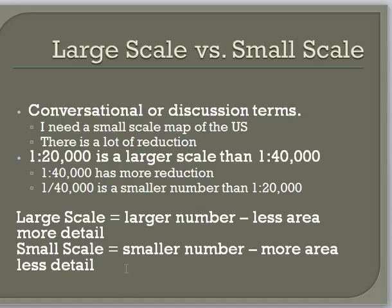A large scale map has less area shown on the map and more detail, and a small scale map will show more area and less detail. So if I were going to make a map of Oregon on a sheet of 8.5 by 11 paper, I would have to have quite a bit of reduction to get Oregon on a piece of paper like that — so it would have a smaller scale than if I just wanted to show Lane County on the same size sheet of paper.